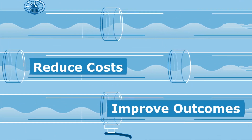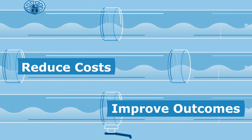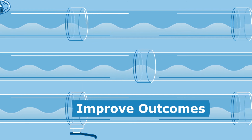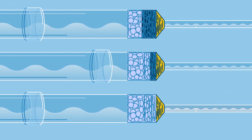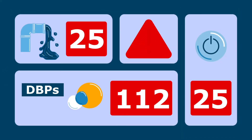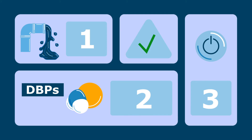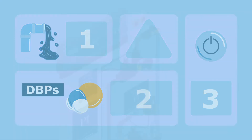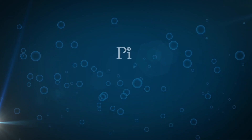Process Instruments is trusted by over 50 plants to help reduce chemical costs, improve process outcomes and keep your filters running better for longer. This leads to fewer shutdowns, call-outs and reduced sludge and disinfection by-products. To learn more about how Process Instruments can improve and refine your coagulation dosing programme, contact us today.